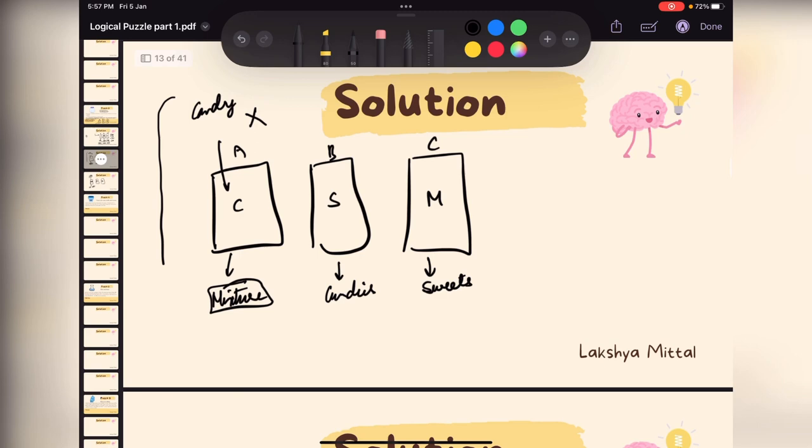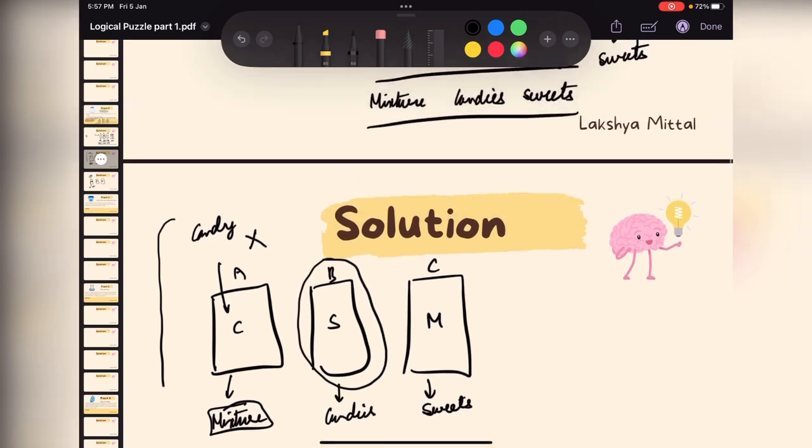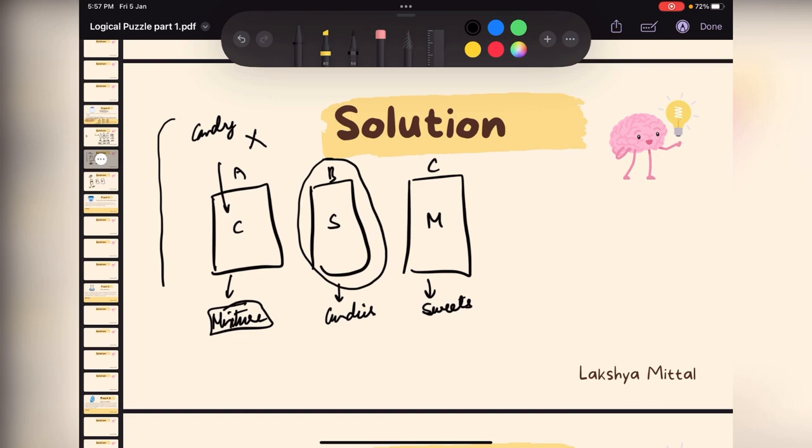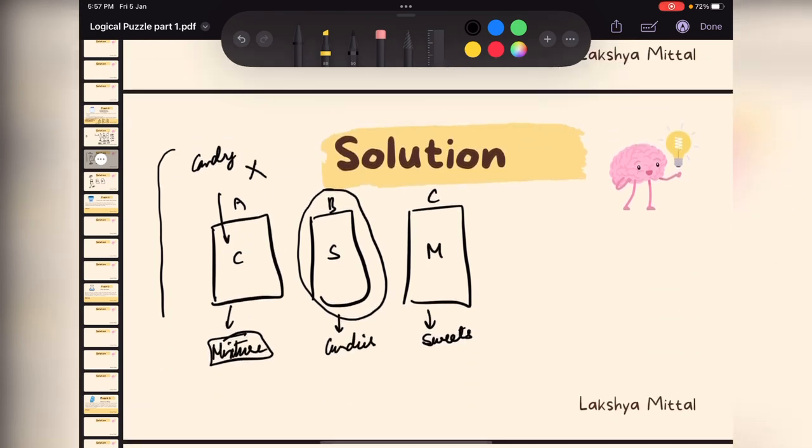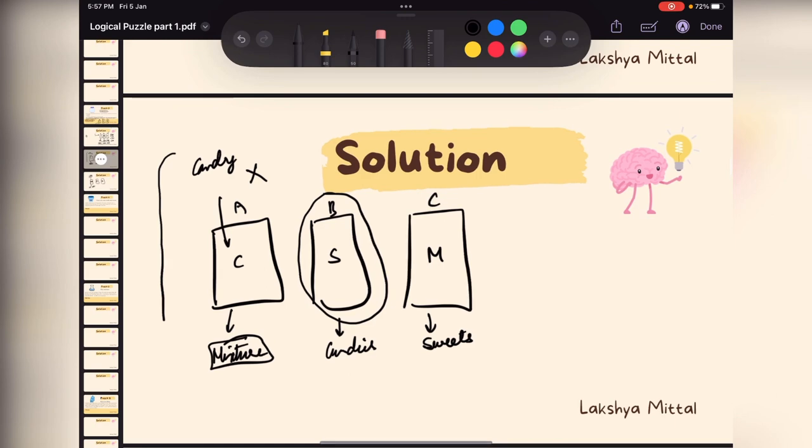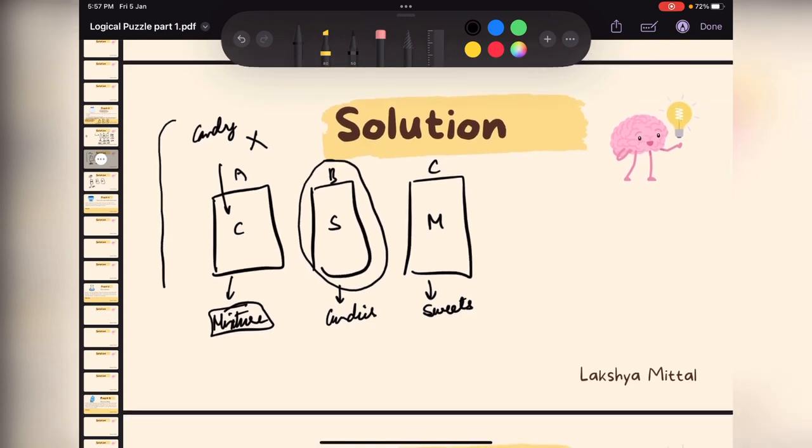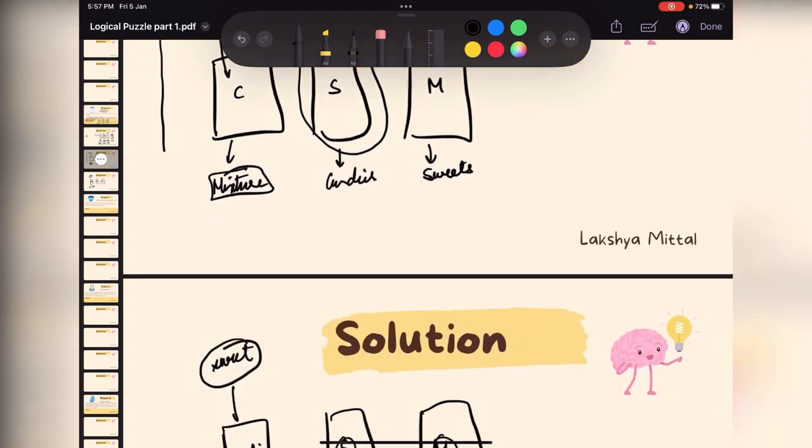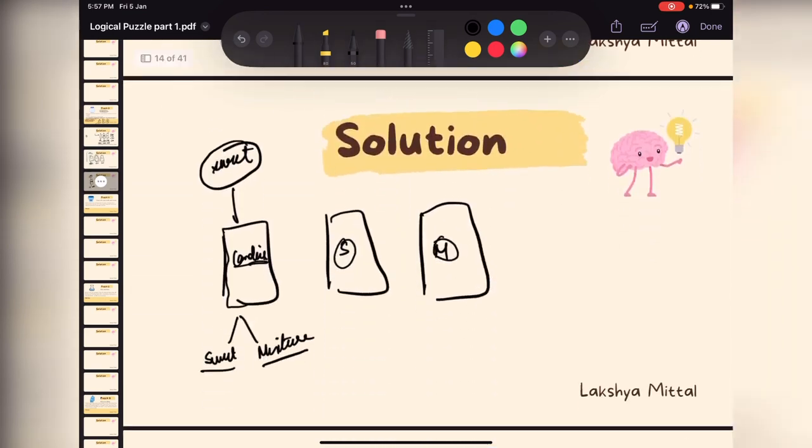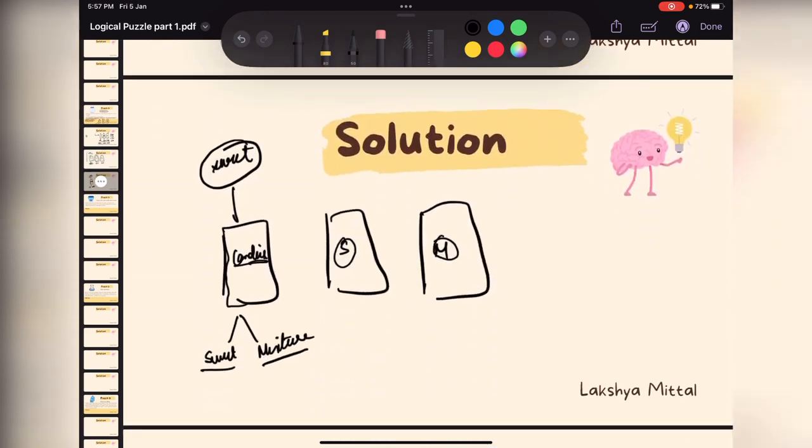Similarly if we check the sweets label, if candy comes out then we will be confused in some cases. If you put your hand and candy comes out then our answer will be correct and we can figure it out but we are not sure.